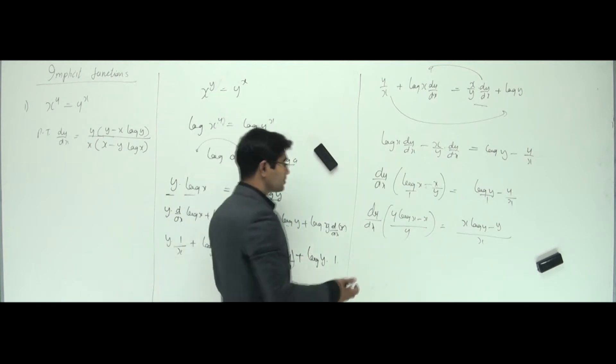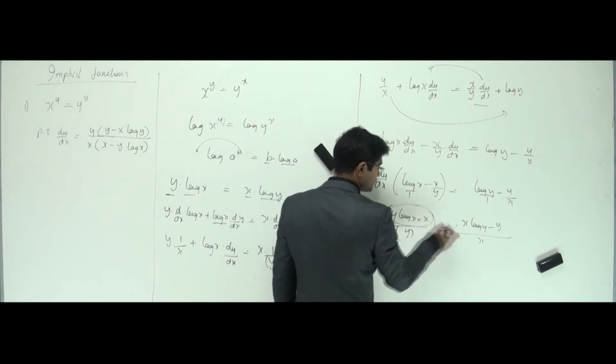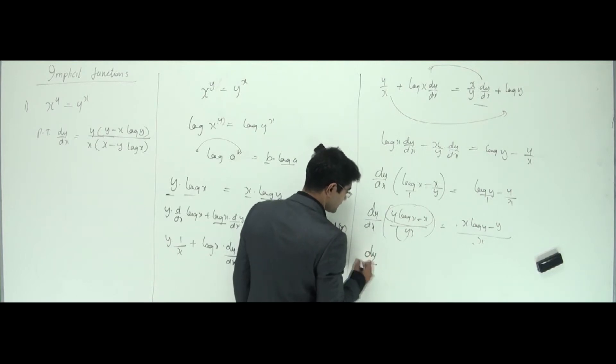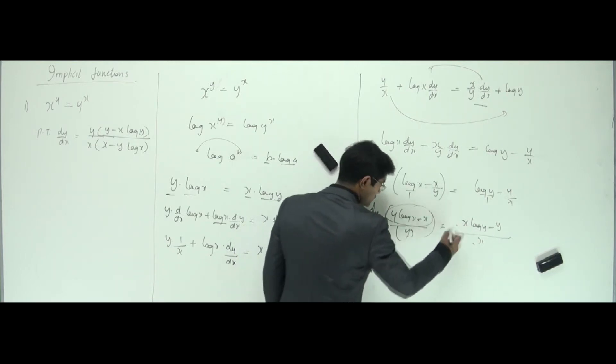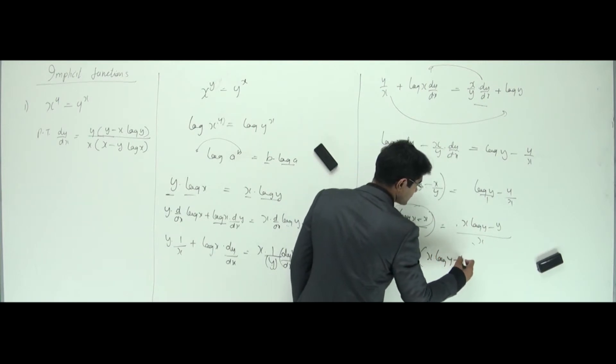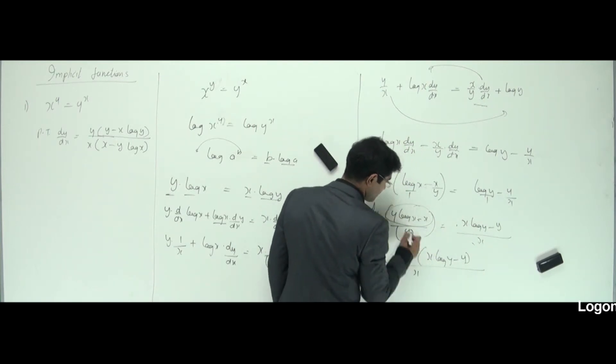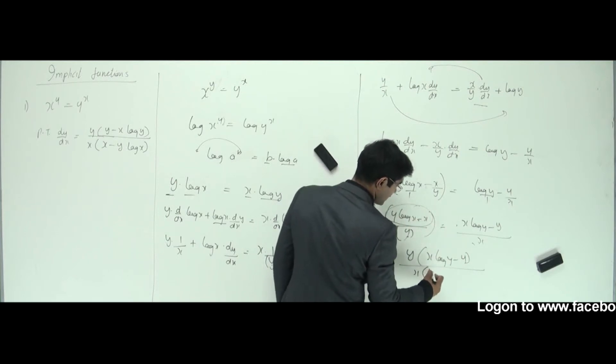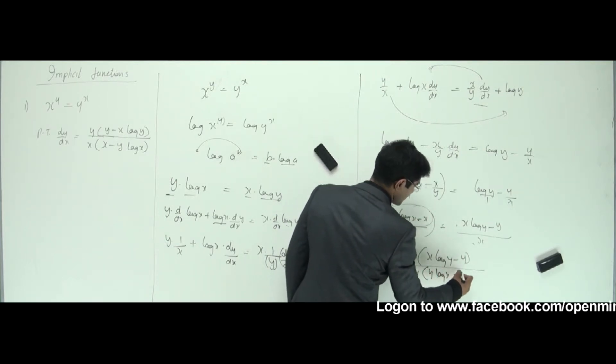I can just cross-multiply this. I can put y on this side, and this whole numerator here down. So I get dy by dx, it goes like y goes on top, y into x log y minus y. The whole thing divided by this x remains here, this whole comes down, that is y log x minus x.